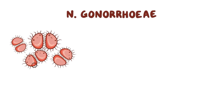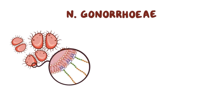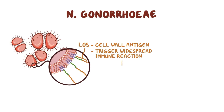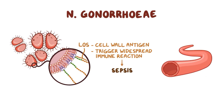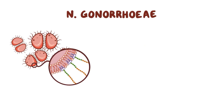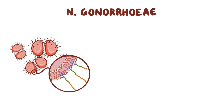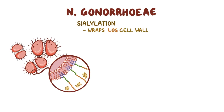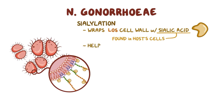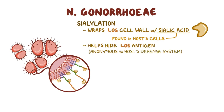Inside the blood, N. gonorrhoeae can use other virulence factors. First, there's a cell wall antigen called lipooligosaccharide, or LOS, which is known for its ability to trigger a widespread immune reaction that results in sepsis — meaning blood vessels dilate, so blood pressure drops, and vital organs don't get enough blood. One final virulence factor of N. gonorrhoeae is its ability to do sialylation, a process by which N. gonorrhoeae wraps its LOS cell wall with sialic acid, the same molecule initially found in the host's cells. This helps the bacteria to hide its LOS antigen, making itself anonymous to the host's defense mechanism, like camouflage.